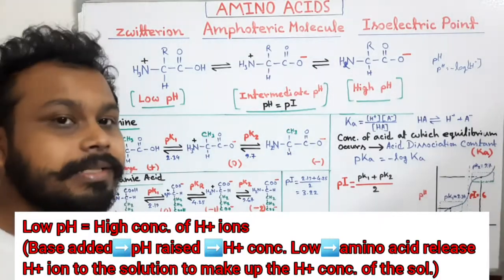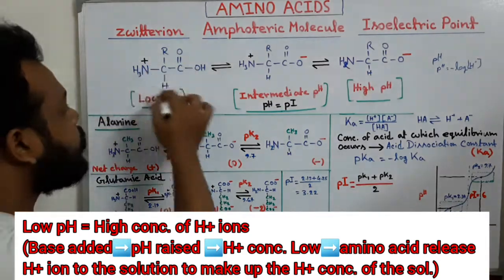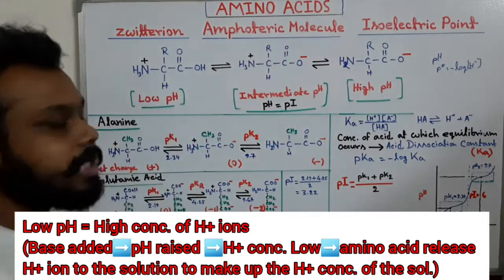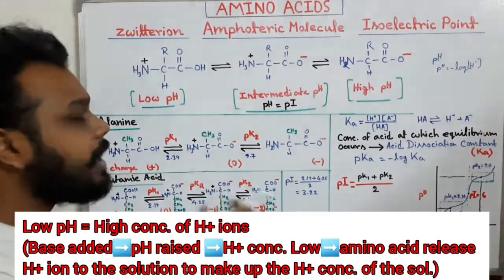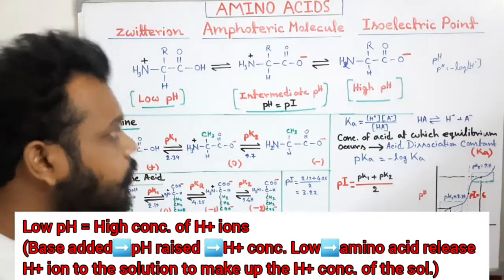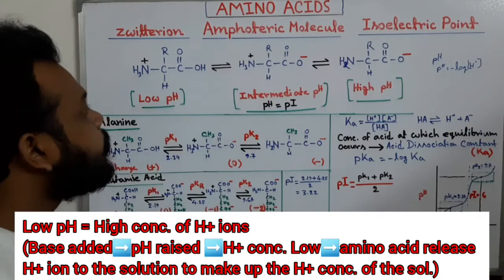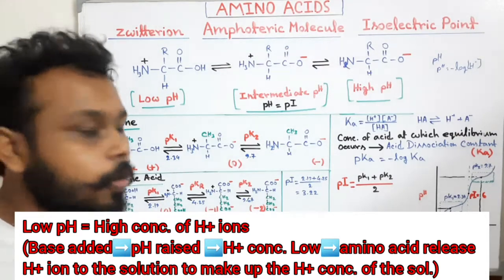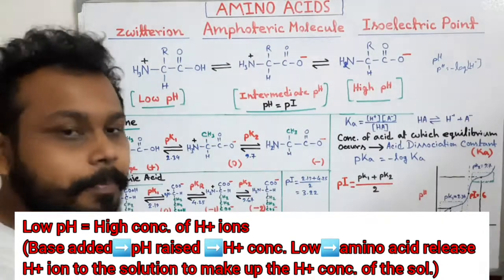Low pH means the hydrogen ion concentration is high, and high pH means the hydrogen ion concentration is low. So in low pH the hydrogen ion concentration in the medium is high. When we add base into this medium, the pH will be raised and the hydrogen ion concentration will be low. So the COOH group releases its hydrogen into the medium.